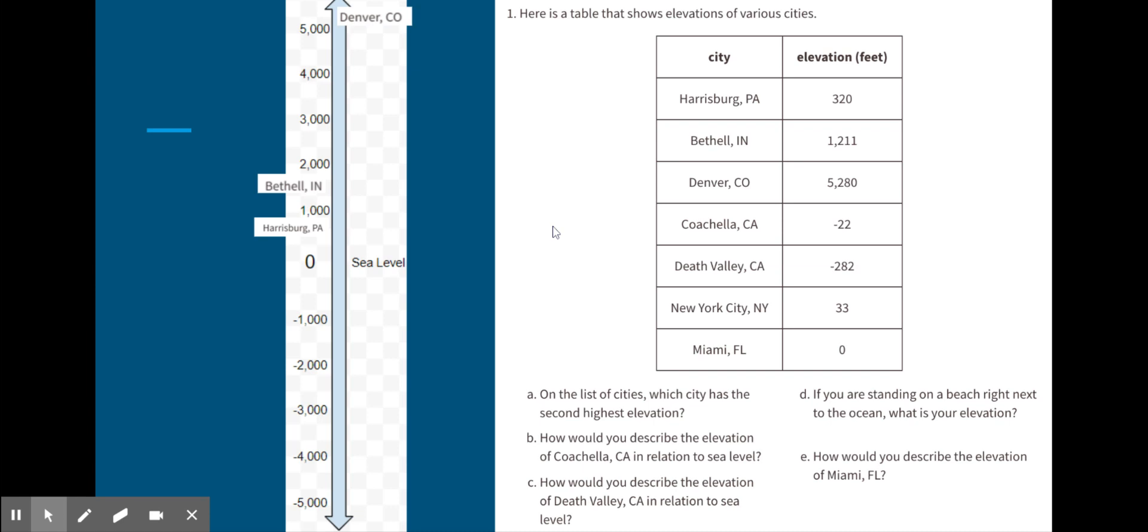Coachella, California: negative 22 feet. That negative symbol tells me it's going to be below sea level. Death Valley, California is at negative 282 feet below sea level—it's going to be below Coachella. Next up is New York City, New York: 33 feet above sea level. And then lastly, Miami, Florida is at zero feet, so it is right at sea level.